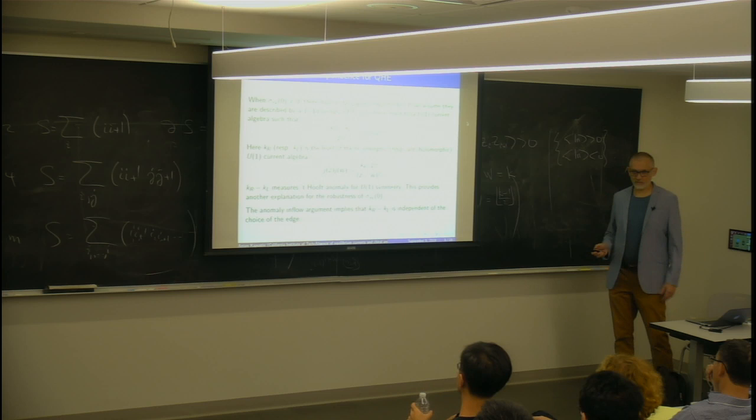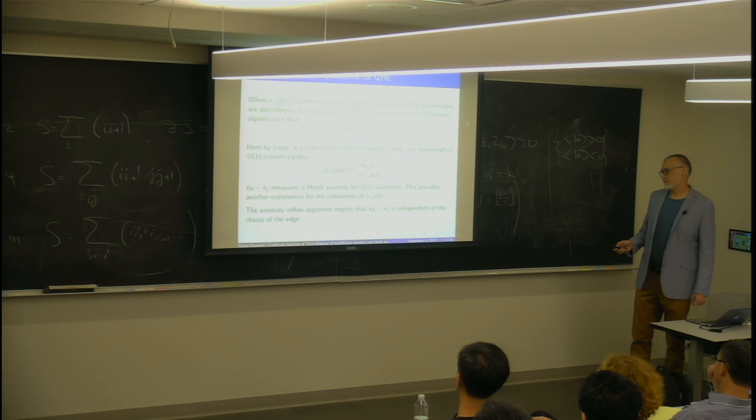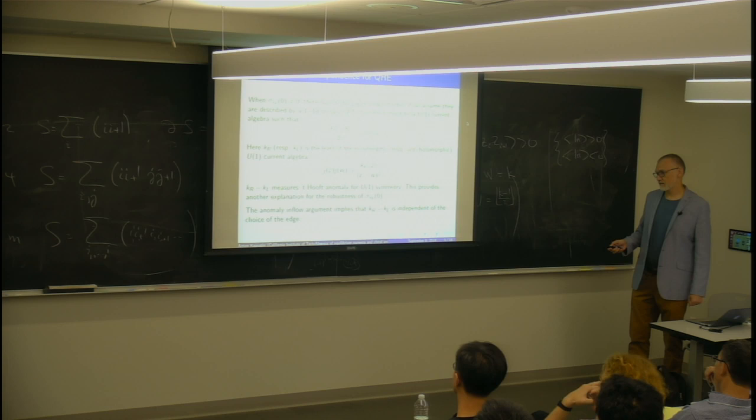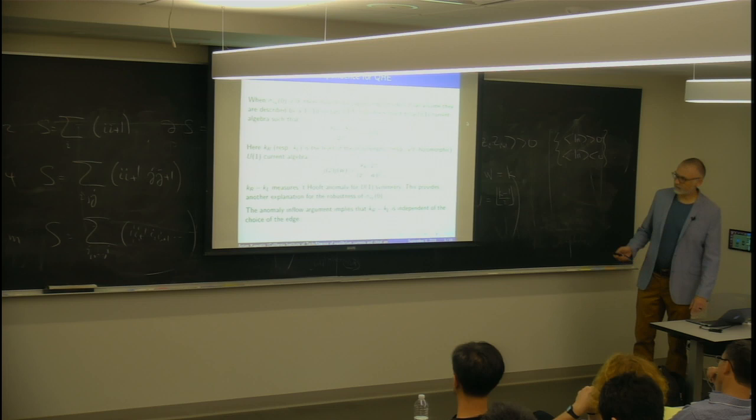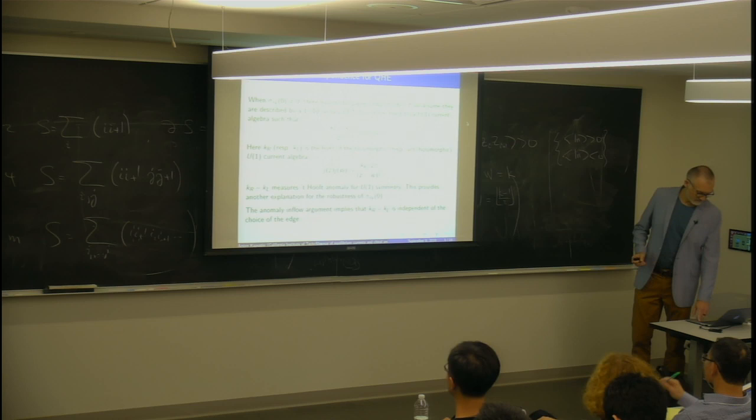And from the edge point of view, this difference is the anomaly for U(1). That's another way to explain why this is really robust. Because if you change the Hamiltonian, the anomalies still cannot change. Also, this coefficient in the left-hand side seems to depend on the choice of the edge. But the right-hand side doesn't. The choice of the edge. And you can also see it actually directly from the anomaly. The anomaly is cancelled by the bulk action. Therefore, you have a different edge for the same bulk. You have the same anomaly in flows, one for the same difference. So this quantity seems to depend on the edge but in fact it's a bulk property.